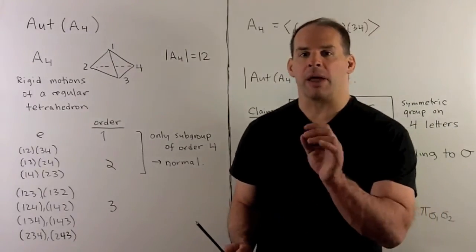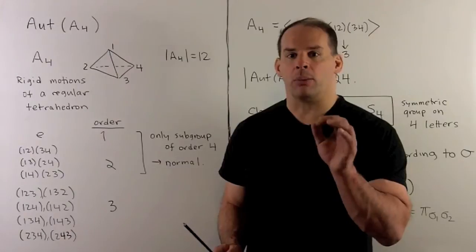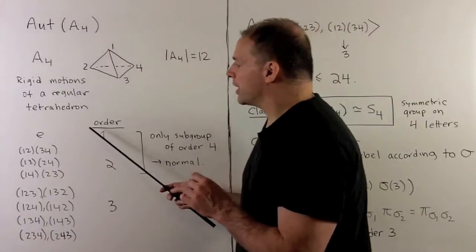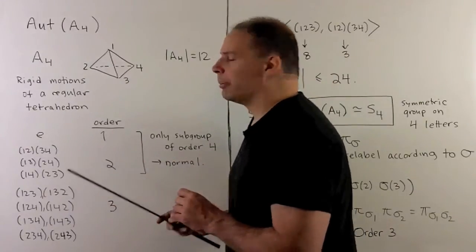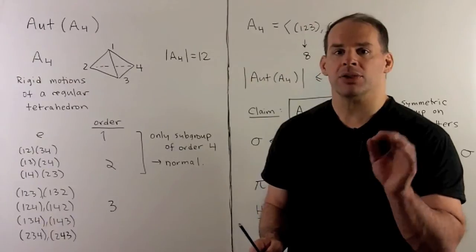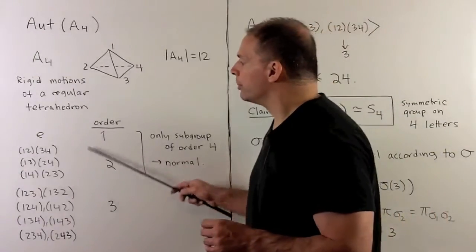Now, a new fact about this group since we've learned about automorphisms: an automorphism is going to carry this unique subgroup of order four back to itself. That holds for inner automorphisms, so that means this subgroup is normal.